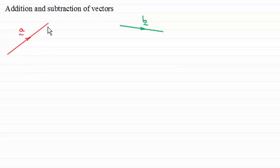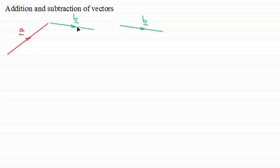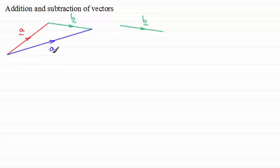Let's say we've got a vector a and a vector b. If I'm going to add two vectors together — vector a and vector b — then if I take vector b and put it on the end of vector a, then if we go back to the start of a and draw a line to the end of b, this vector here is defined as a plus b. The length of this line isn't necessarily going to be the length of this line plus the length of this line.